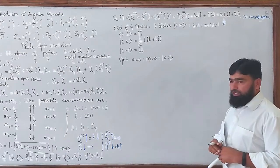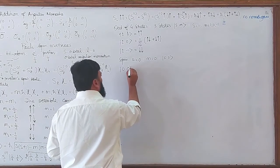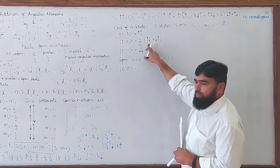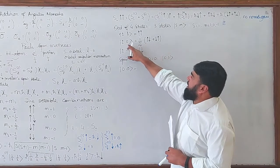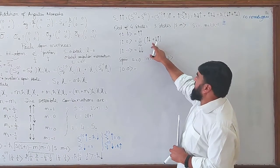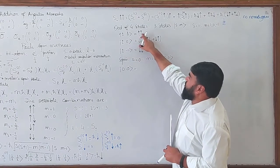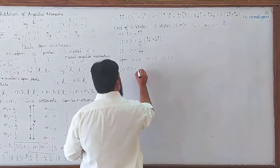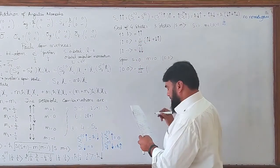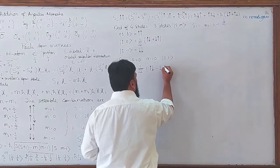So the state |0,0⟩ — what will it be? Look at this: S=1 and M is coming down to zero because up-and-down nets to zero in projection. Similarly down-and-up nets to zero. So M equals zero here, M equals one here, M equals minus one here. The |0,0⟩ state will be the normalized combination (1/√2)(|up,down⟩ minus |down,up⟩) — this is the singlet state.